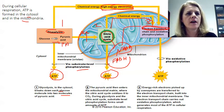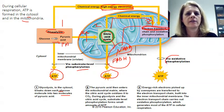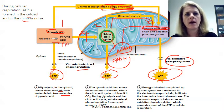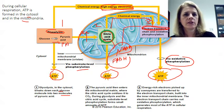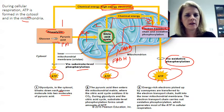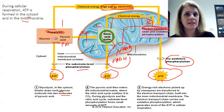Once you've made all these byproducts — all those electron carriers — they all go into the electron transport chain. Via oxidative phosphorylation, you get a ton of ATPs. Now I'm going to let you watch a quick video that gives you a 3D animation of how this works, and then we'll figure out exactly how many ATPs we got by doing this.